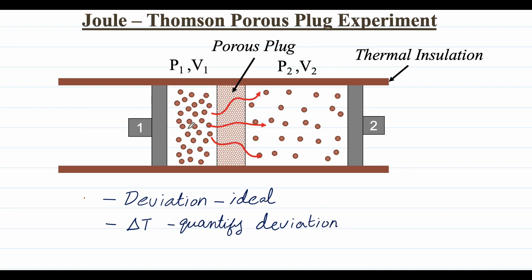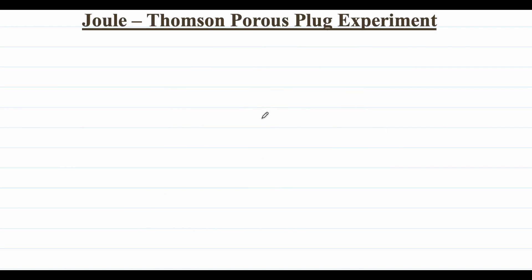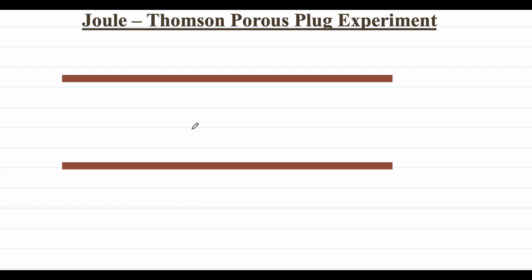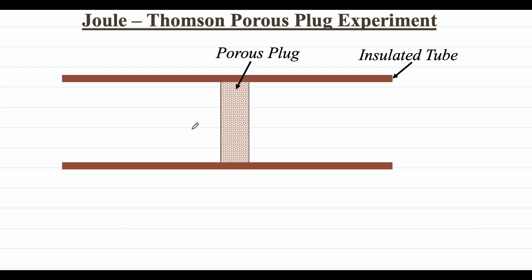The experiment is about allowing a gas to flow from an initial pressure and volume through a porous plug to another pressure and volume. The apparatus is an insulated tube separated into two parts by a porous plate, which divides the insulated tube into two sections.